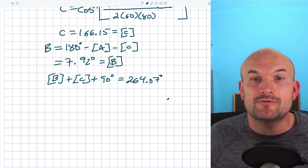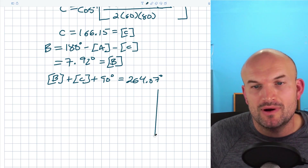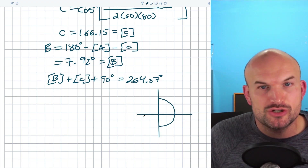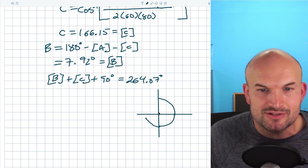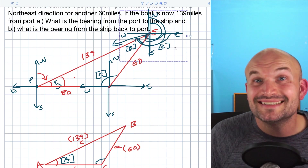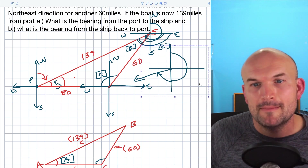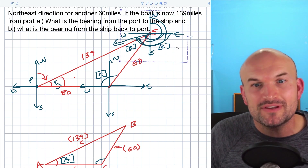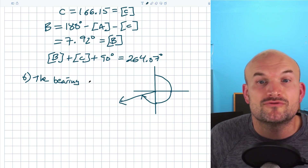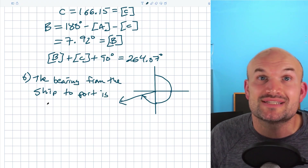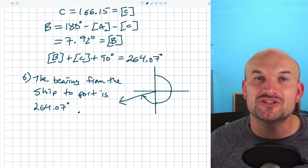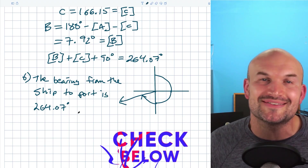Let's check our work. From due north, 90 degrees gets us to east, 180 to south, 270 to west. So 264 degrees is just a little short of west, which looks like the right direction from the ship back to port — and it matches the original graph. So the bearing from the ship to port is 264.07 degrees. Hopefully this was helpful, along with the tips covered along the way. Check out the playlist and resources below or the next video for more examples.